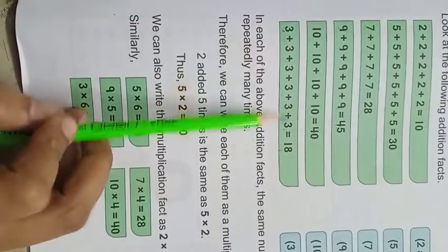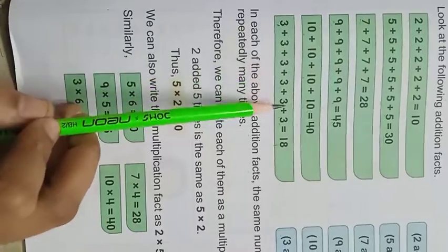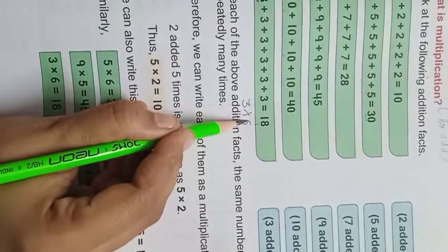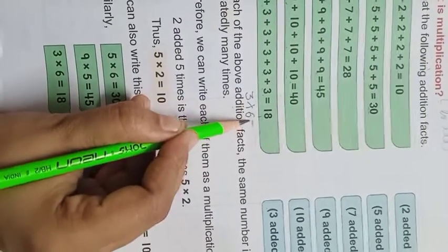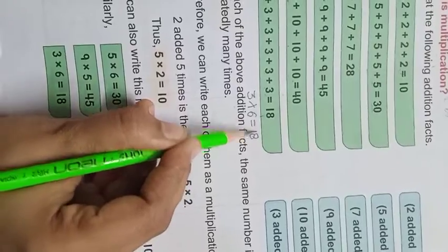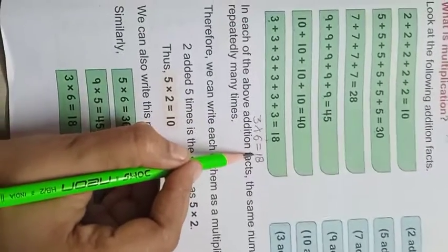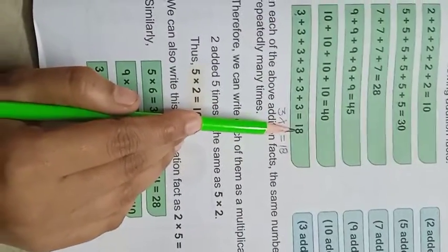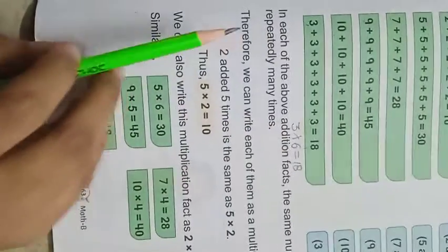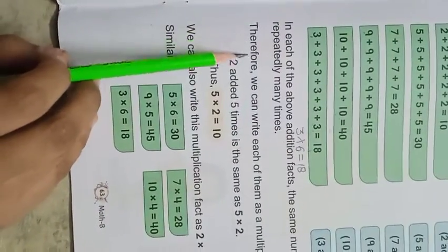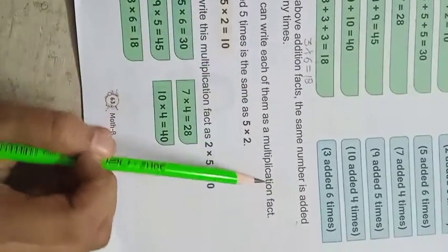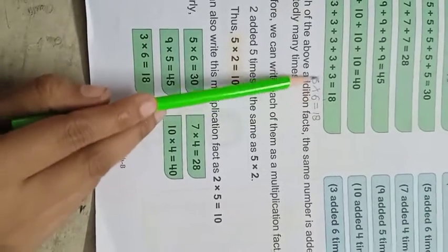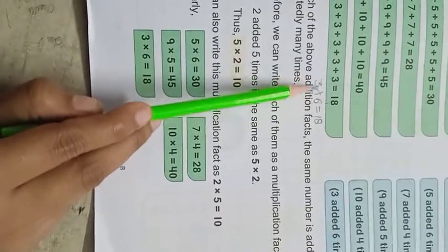Three ko yaahan par hum six times add kar rahe hain - one, two, three, four, five, six. Toh isko likh sakte hain: three, kitne times repeat kar rahe hain? Six times. Toh three times six equals kitna aa raha hai? Eighteen. Aisi hamari table form hoti hai. Therefore, we can write each of them as a multiplication factor. Hum jis number ko jitne times add karte hain, woh uska multiplication factor ban jaata hai, yani table ban jaati hai.